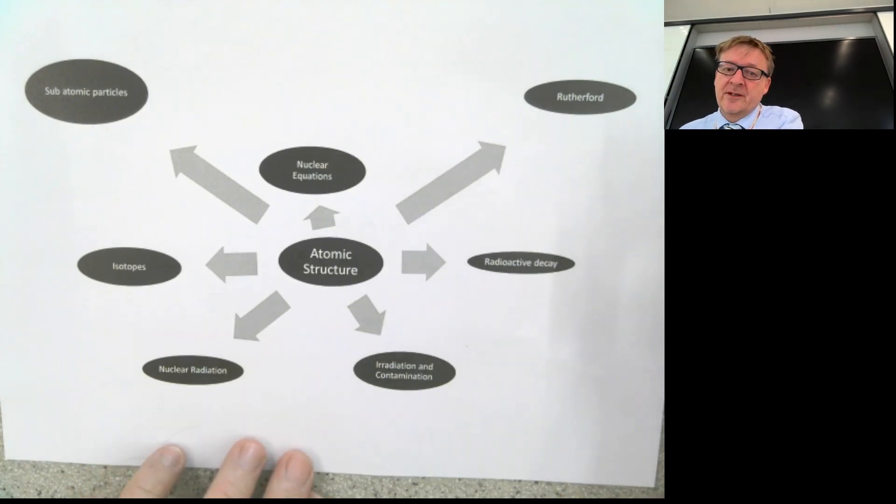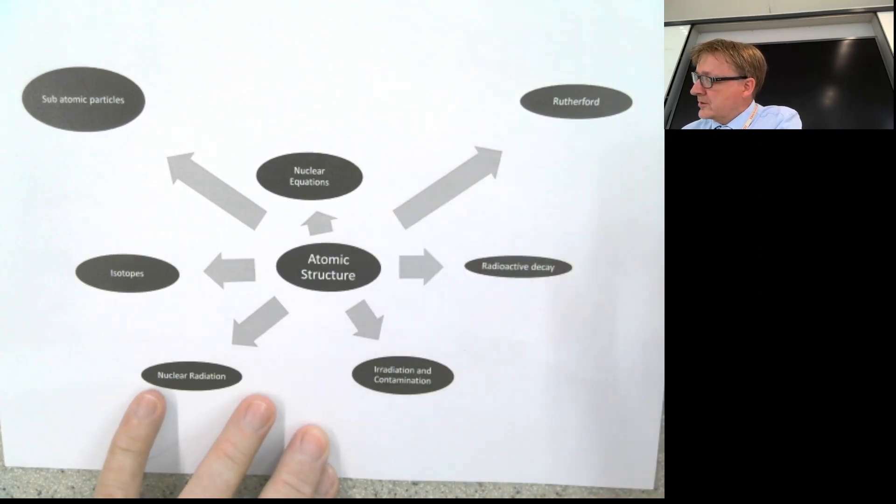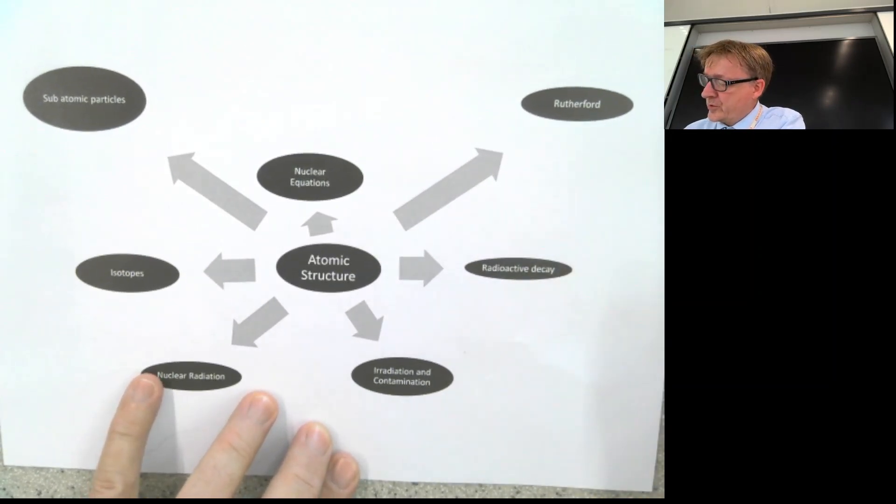So what I'm going to do now is I'm going to go through the mind map for atomic structure. Starting on the right hand side here, what we're talking about, we're talking about radioactive decay. And the most important thing with radioactive decay is your half-life graph. And it looks approximately like that.